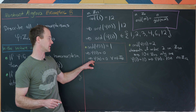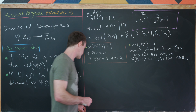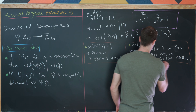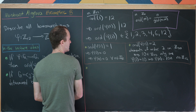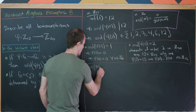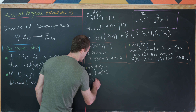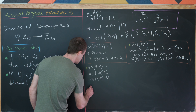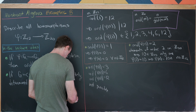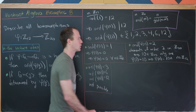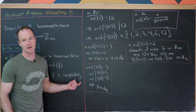We've got a homomorphism where everything is sent to 0 (the trivial homomorphism), and a homomorphism where everything is multiplied by 10. Now, what happens if the order of φ(1) equals 3, 6, or 12? That is not possible, because there are no elements of those orders within Z20. The only possible orders within Z20 are divisors of 20, and 3, 6, and 12 are clearly not divisors of 20.